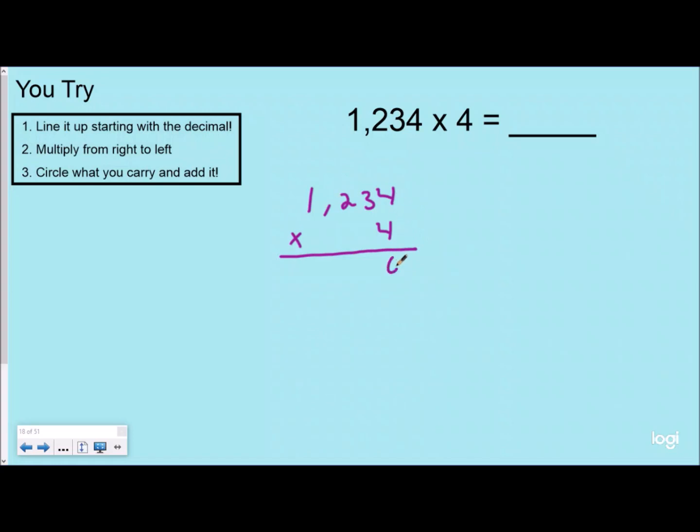So I have 1,234 times 4, and I'm going to be going from right to left. So 4 times 4 is 16, regroup my 1 to my tens place. Multiply then add, so 4 times 3 is 12 plus 1 is 13, so carry my 1 or regroup my 1. Multiply then add, so 4 times 2 is 8 plus 1 is 9. I haven't gone past 10, so there's no need to regroup.